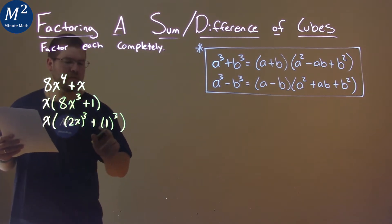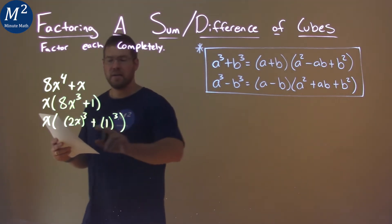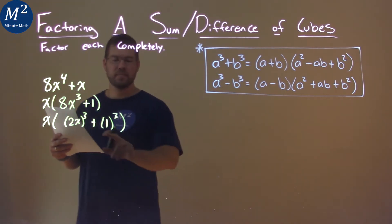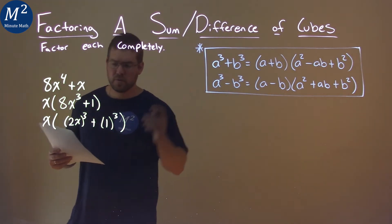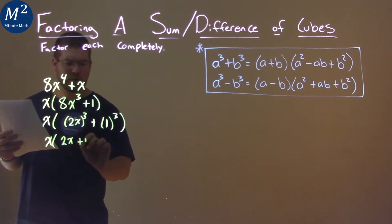But the goal here is to write as a sum of two different cubes. So in that case, a is equal to 2x, and b is equal to 1. Let's use our formula. x times, or a plus b, so 2x plus 1.